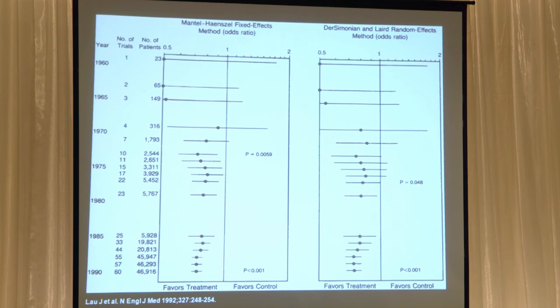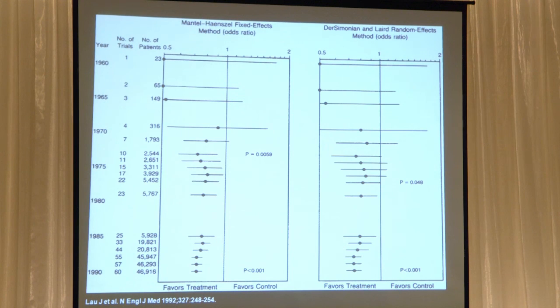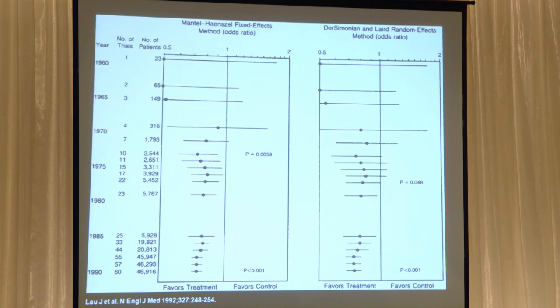This is what's called a fixed effects model — it's the one our tools provide. This is called a random effects model. When you get down to the bottom you get pretty much the same result, but compare the two side by side: the random effects model is a more conservative estimate of the effect size. And another subtle observation — the confidence intervals of the random effects model cross the midline more often.